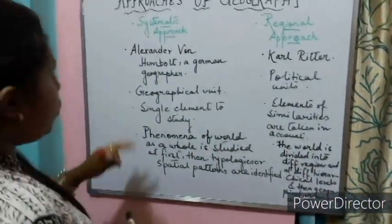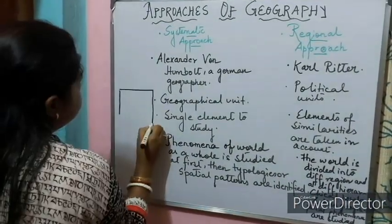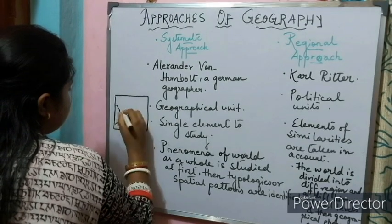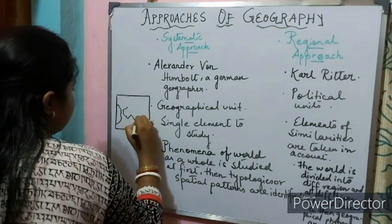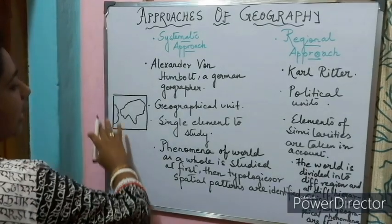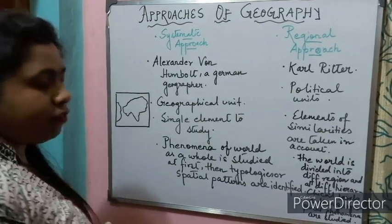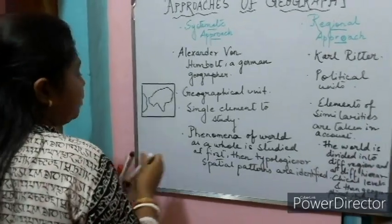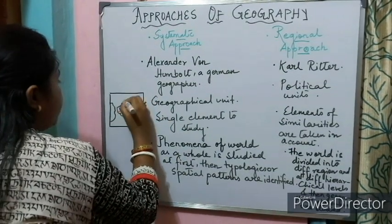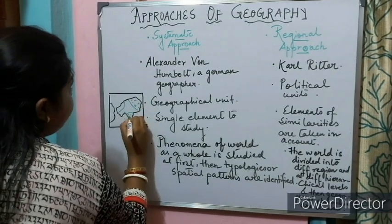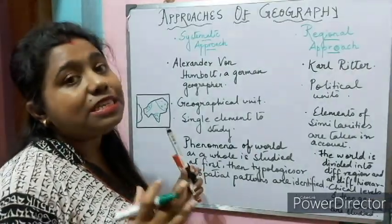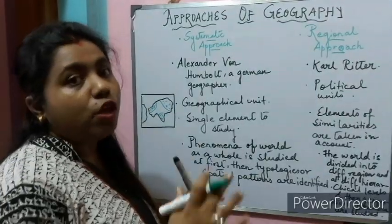Let us understand it with an example. Suppose we want to study natural vegetation using the systematic approach. First, we will study the whole world as a whole. Then, we will identify different typologies or special patterns — for example, monsoon vegetation, equatorial vegetation. This way, we can identify and understand the spatial distribution and spatial variation around the globe.